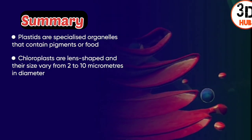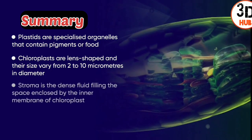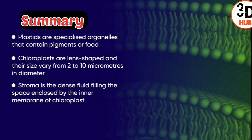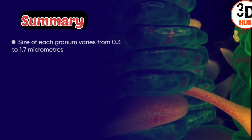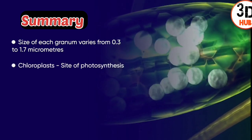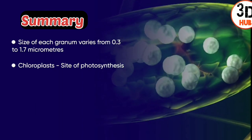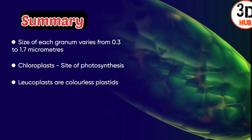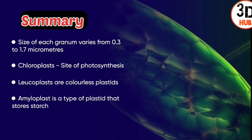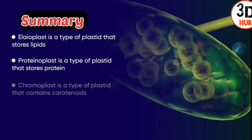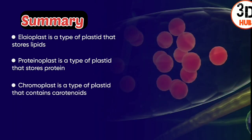In summary: a chloroplast is a lens-shaped green plastid about 2 to 10 micrometers in diameter, and the stroma within it contains grana ranging from 0.3 to 1.7 micrometers. Leukoplasts are colorless plastids of three types — amyloplasts storing starch, elaioplasts storing lipids, and proteinoplasts storing protein. Chromoplasts are colored plastids containing pigments like carotenoids.